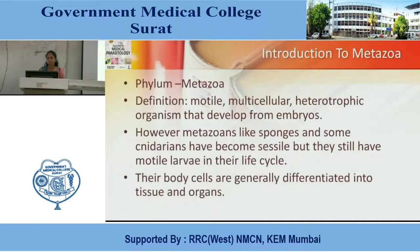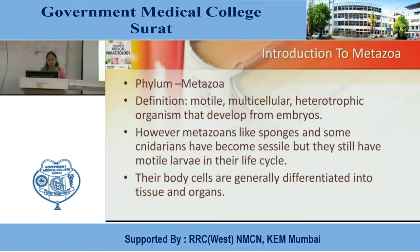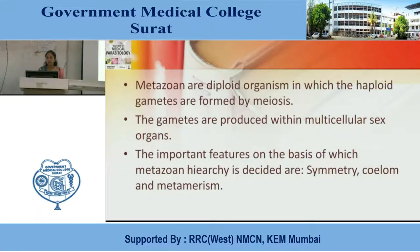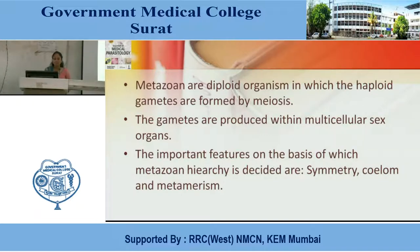Introduction to Metazoa. Metazoa is from Phylum — it is the Phylum Metazoa. Definition: it is a motile, multicellular, heterotrophic organism that develops from embryos. However, Metazoans like sponges and some Cnidarians have become sessile, but they still have motile larvae in their life cycles. Their body cells are generally differentiated into tissues and organs. Metazoans are diploid organisms in which haploid gametes are formed by meiosis. Gametes are produced within multicellular sex organs. The important features on which Metazoan hierarchy is decided are three: symmetry, coelum, and metamerism.